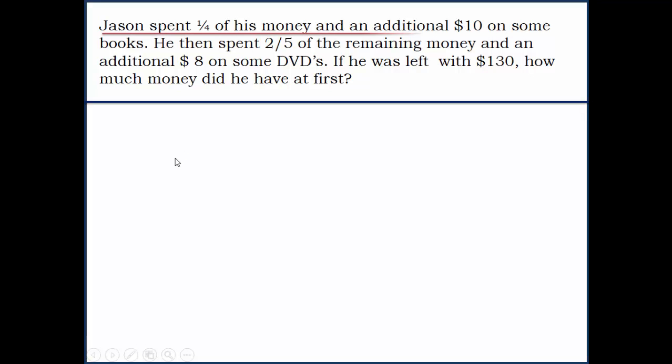Let's look at the question. Jason spent one-fourth of his money and an additional $10 on some books. He then spent two-fifths of the remaining money and an additional $8 on some DVDs.